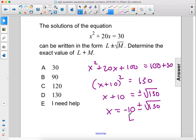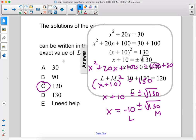Therefore, L is negative 10 and M is 130. So negative 10 plus 130 gives us 120. The answer is C.